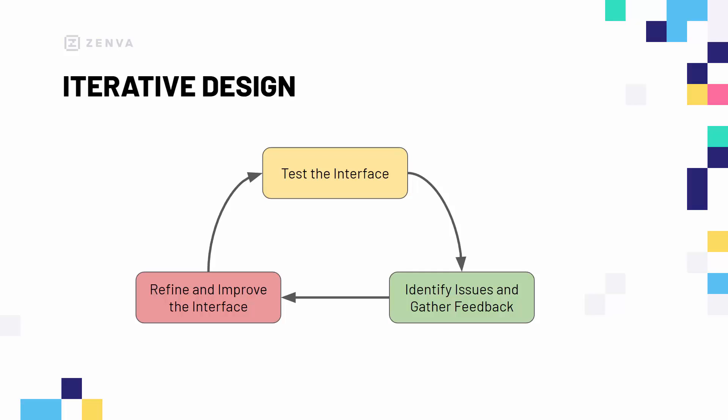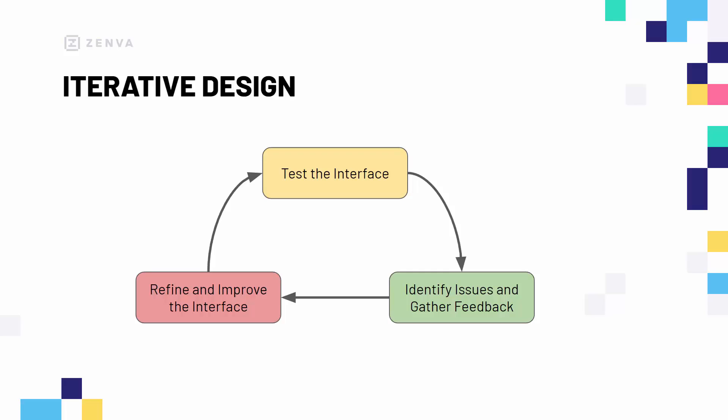How are we going to be doing this with our wireframe? Because our wireframe doesn't really work — it's not really doing anything, there's no game to play, the buttons don't do anything, the joystick doesn't do anything. For this, we are going to simulate a user interacting with our interface. We're going to sort of play pretend here and pretend we are a user who wants to do things in our game and interact with our UI.